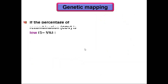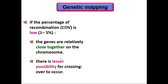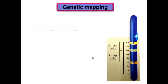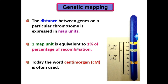If the COV value is low — around 1 to 5 percent — the genes are relatively close together on the chromosome. Since they are very close together, there is less possibility for crossing over to occur. The distance between genes on a chromosome is expressed in map units, where one map unit is equivalent to one percent recombination.